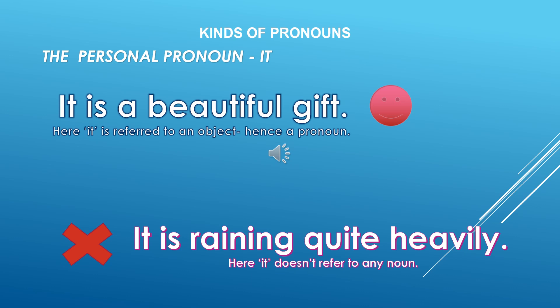These are the personal pronouns we are going to use. We have to be very careful with the word 'it' — when it is used as a pronoun and when it is not. For example: 'It is a beautiful gift' — here it is a pronoun, you are referring to a gift, so that is a pronoun. But 'It is raining quite heavily' — here it is not referring to any kind of object, so here it is not a pronoun. This concept should be very clear; use it consciously, students.